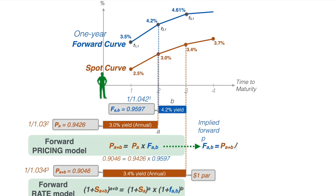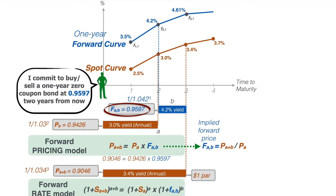The relationship for forward pricing can be generalized to this equation. To calculate the implied forward price, we divide the price of the longer zero coupon bond by the shorter zero coupon bond. In other words, 0.9597 is the price agreed today between the borrower and lender for a one-year zero coupon bond that begins in two years. This also means that the borrower and lender of this forward contract expect the one-year spot rate to be 4.2 percent two years later, so this is a fair price for the forward contract today.